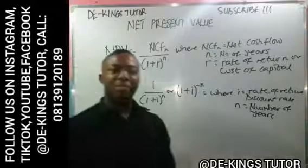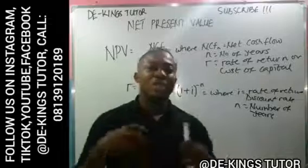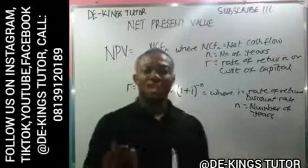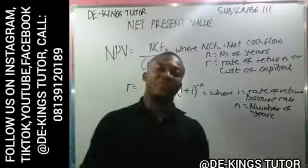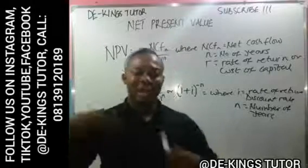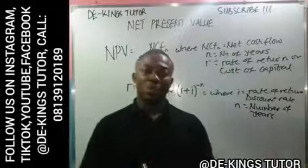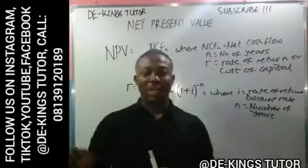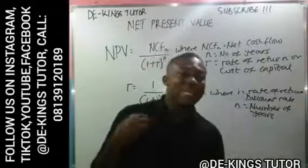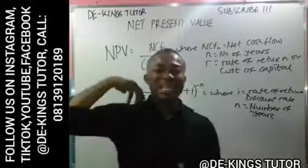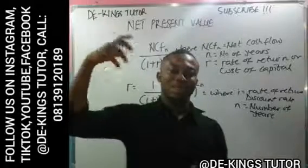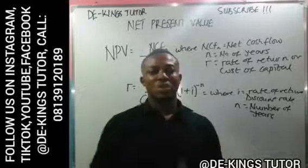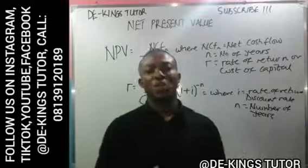The NPV can be positive or negative. It is positive when all the inflows from different years, converted to present value, exceed the present value of the outflow — that is, exceed what was invested in the project. It is negative when what they invested in the project is more than their expected inflow.